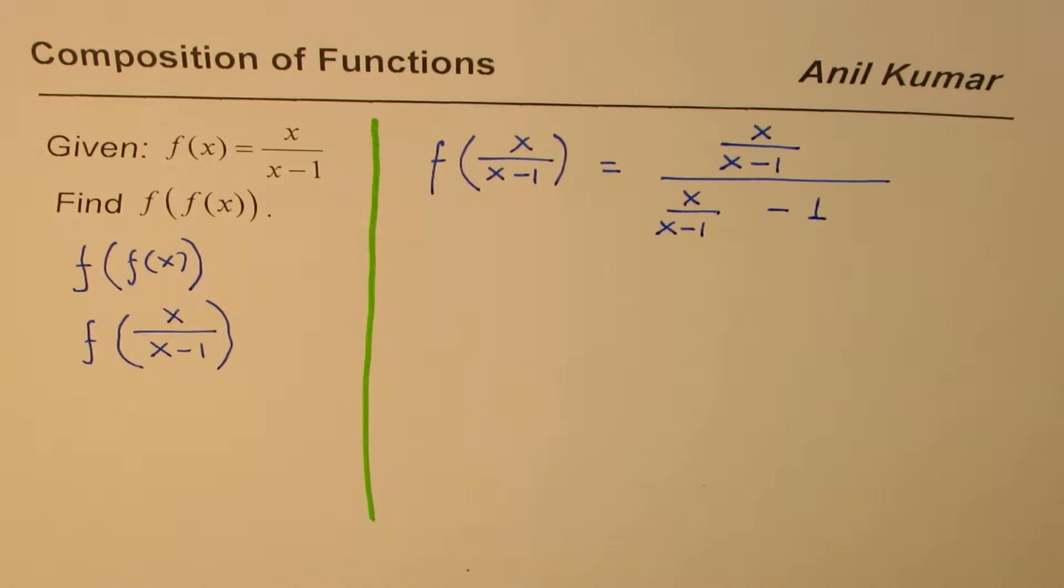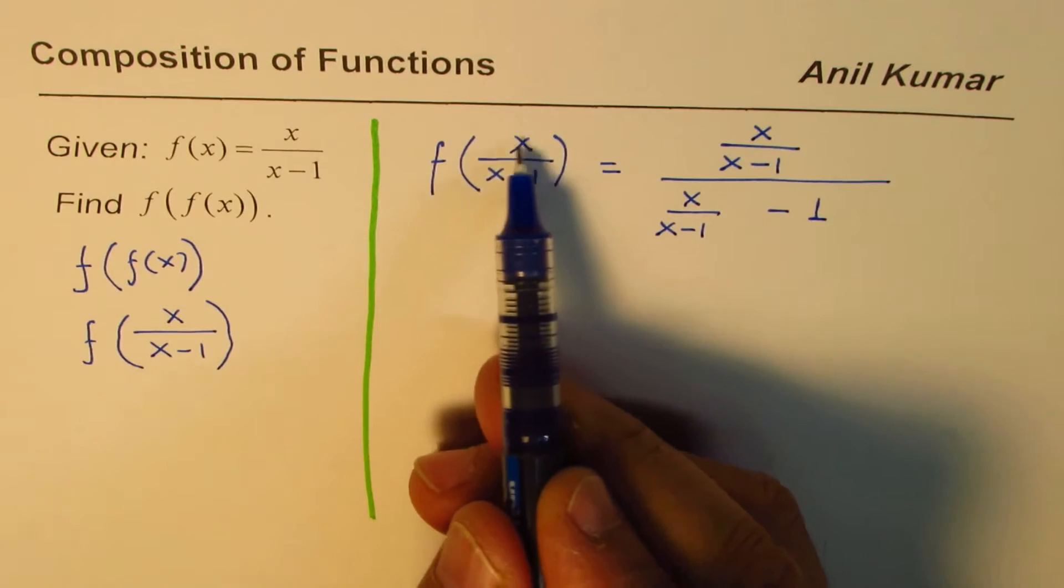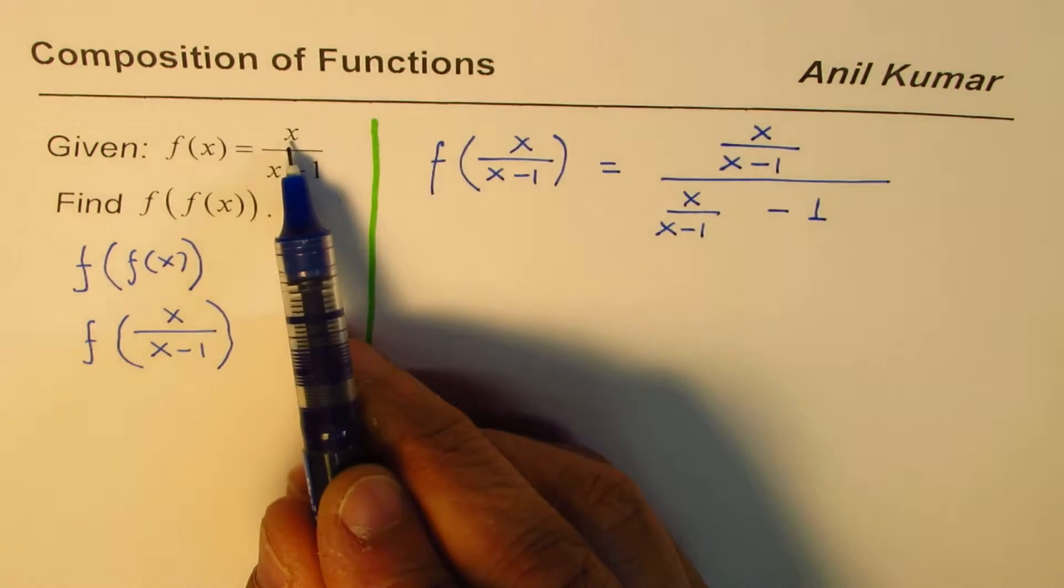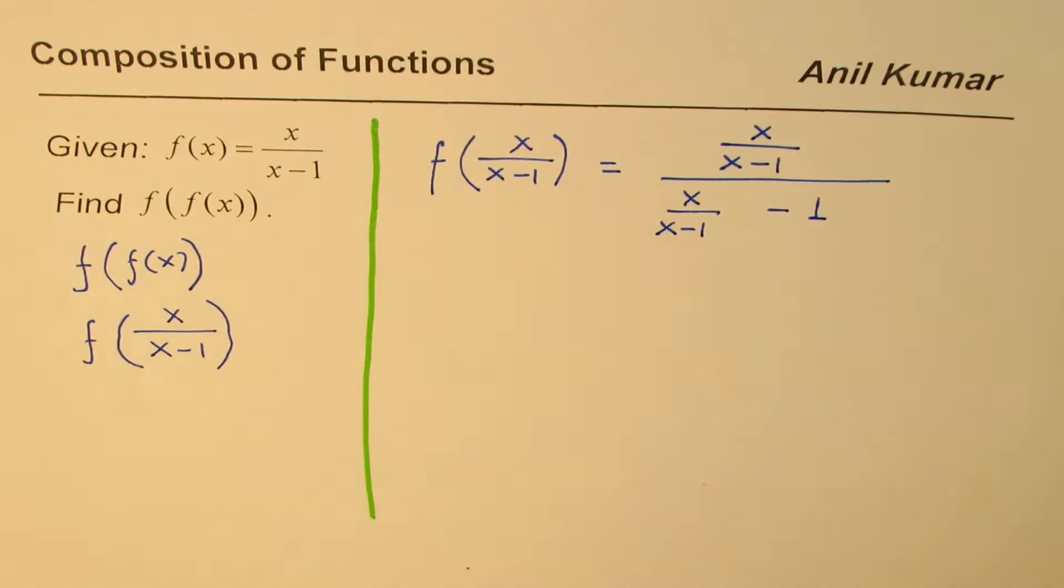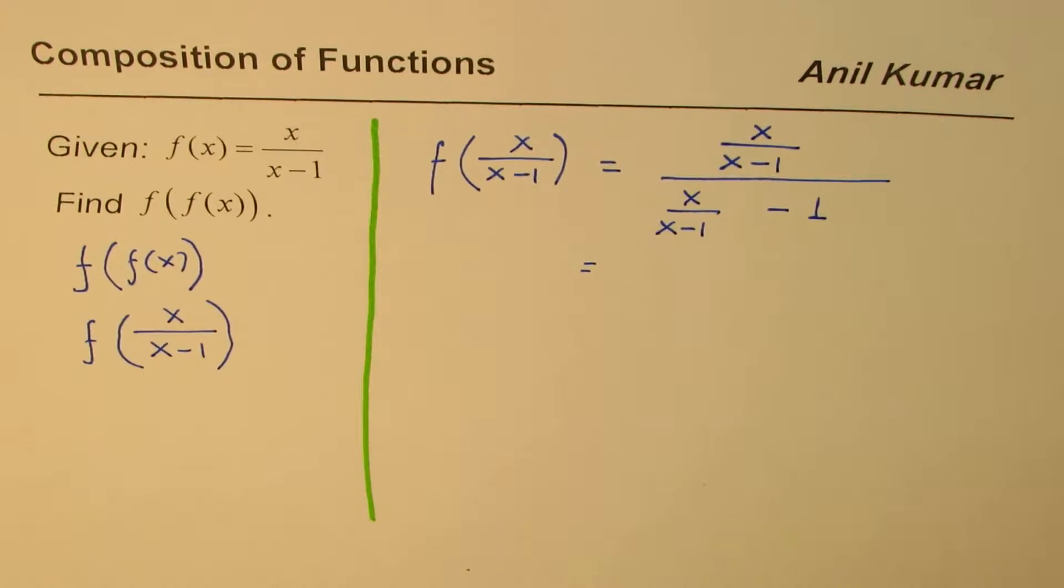Do you get it? That is function of function. We replaced this value by this value. This was substituted for the x value. Now, how to solve this complicated multi-layered fraction? That's the second part to understand.